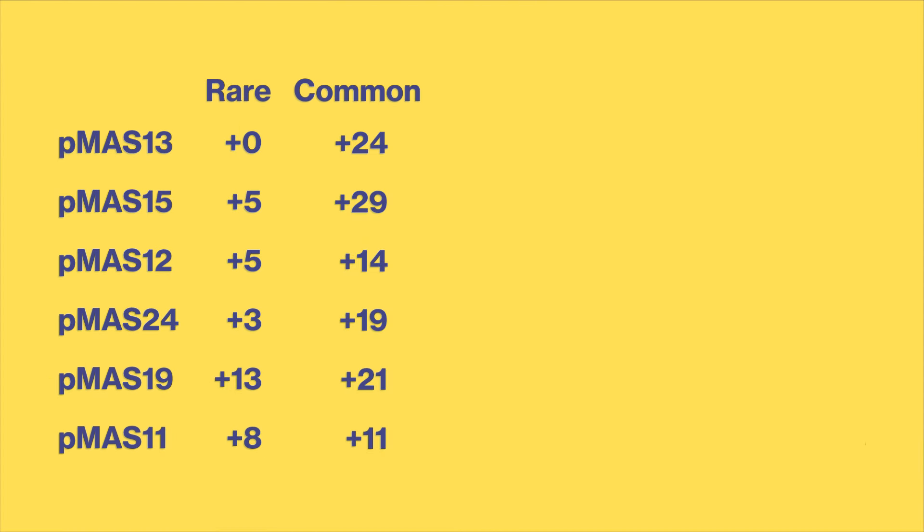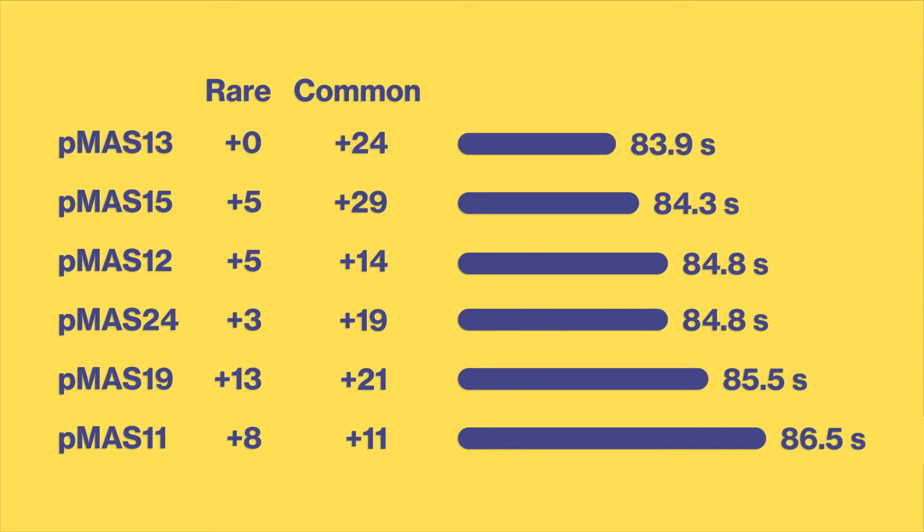Using the same approach, they found that the average translation time for the modified lacZ mRNAs ranged from 83.9 seconds in the gene with 0 rare codons and 24 common codons inserted, to 86.5 seconds in the gene with 8 rare codons and 11 common codons inserted.